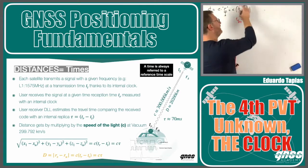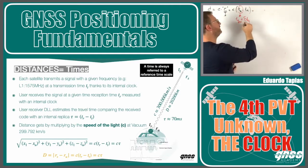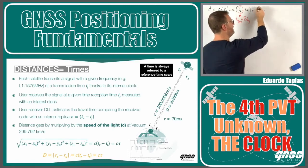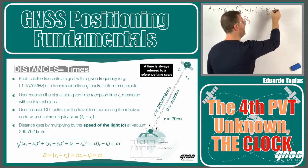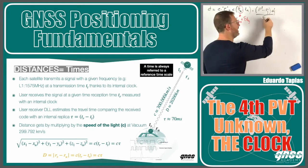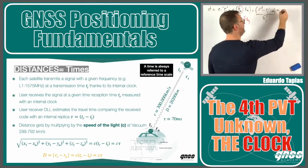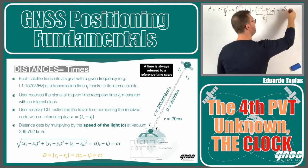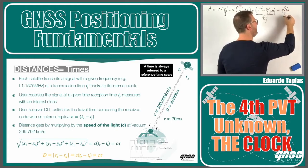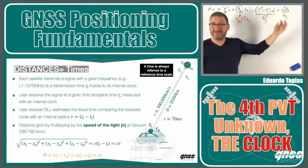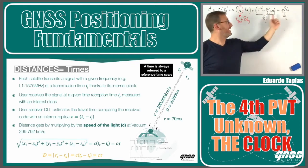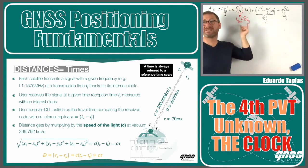At the end, the distance estimated by the receiver will be the geometrical range between the satellite and the receiver — the geometrical distance from satellite J to the receiver — plus C multiplied by delta T_R. This term is what we call the clock bias B_J. So the estimated distance equals the geometrical range plus the bias of the station with respect to the GPS time scale reference.